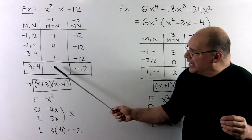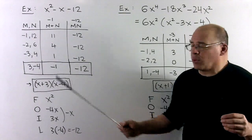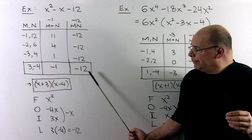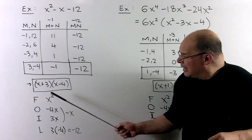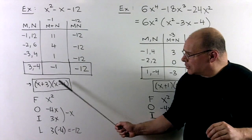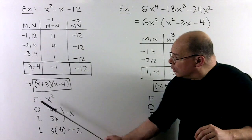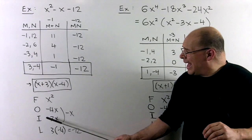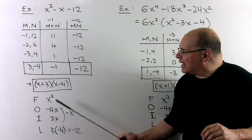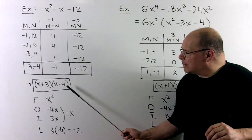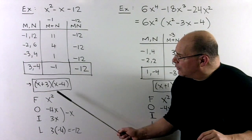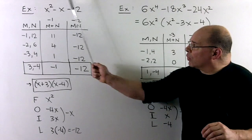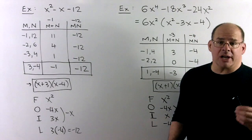We change the factors for minus 3 and 4 to 3 and minus 4. Adding gives minus 1, and multiplying gives minus 12. Dropping into x plus, x plus gives x plus 3 times x minus 4. Checking by FOILing: first gives x squared, outside gives minus 4x, inside gives 3x, last gives 3 times minus 4 equaling minus 12. Adding inside and outside gives minus x. All parts of the original are present, so that checks our work.